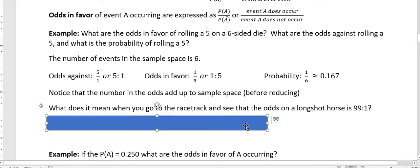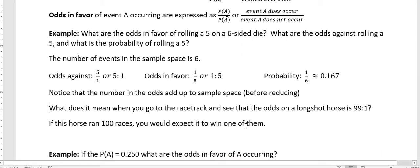But if this horse ran 100 races, you would expect them to win one, right? They have 1 in 100 chance of winning. That's what that really means. We would add those two together, our sample space being 100. They have 1 in 100 chance of winning a race.